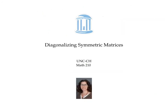In this video, we worked out how to diagonalize a symmetric matrix A by putting the eigenvalues of A into the diagonal matrix D, and putting eigenvectors of A as the columns of the matrix P, after first making sure to rescale those eigenvectors to have length one. When we do that, we end up with a matrix P that's not only invertible, but actually orthogonal.